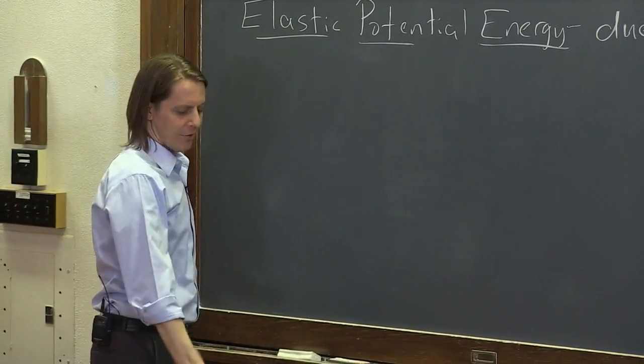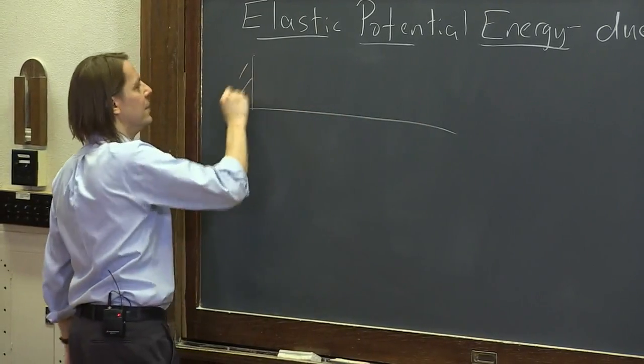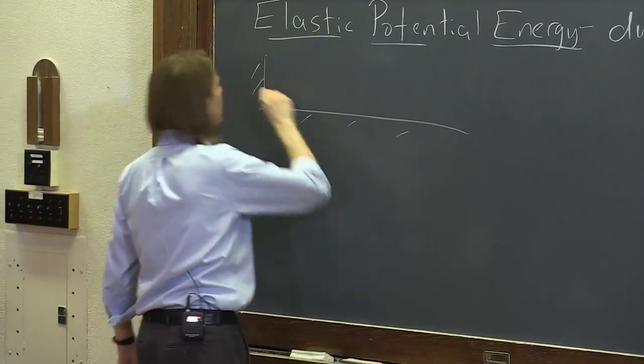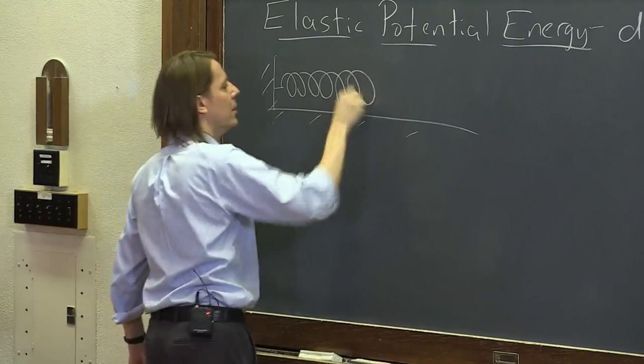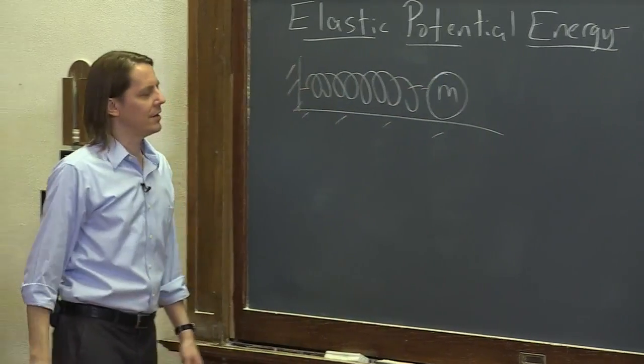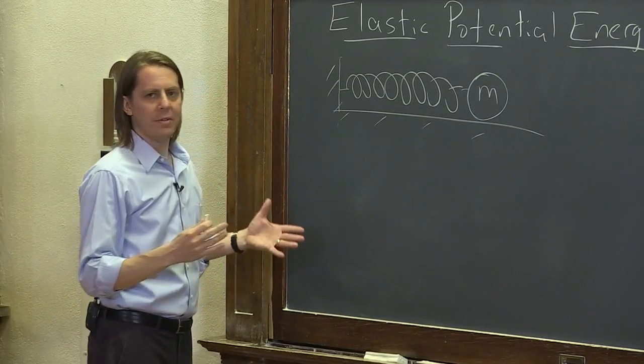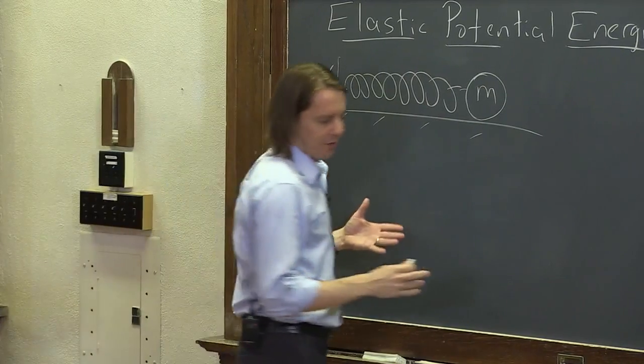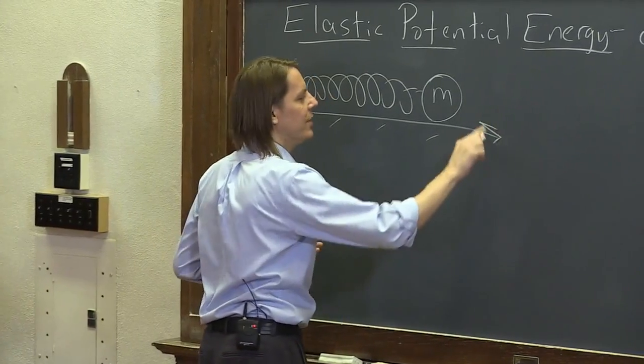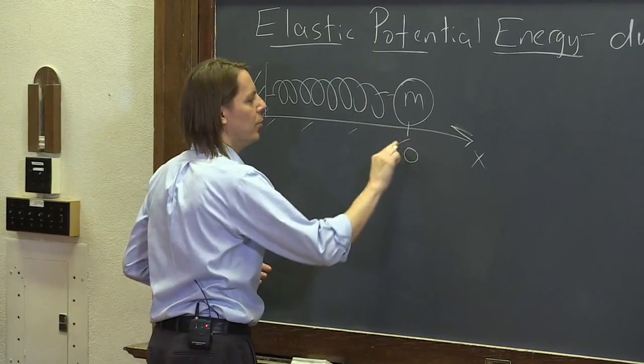So let's think about a spring in a situation kind of like this: it is clamped at one end and it's got a mass on it. Now a spring always has a natural length that it wants to be. If we think of this as the x-axis that it's on and call this the origin...